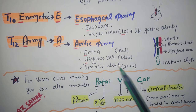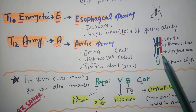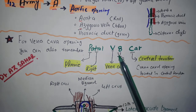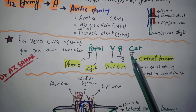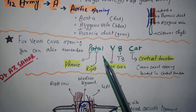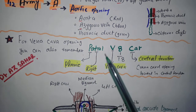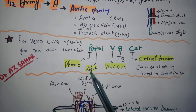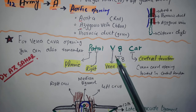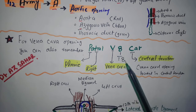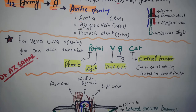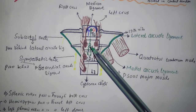The aortic opening is the posterior opening in the diaphragm. Another mnemonic is 'Patrol V8 Car': P-R is for right phrenic nerve, V is for vena caval opening (inferior vena cava), 8 is for T8, and Car is for central tendon — the vena caval opening is located in the central tendon.